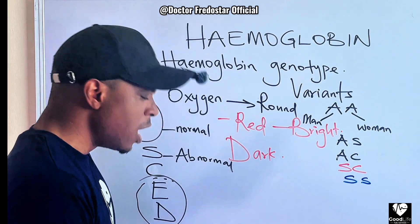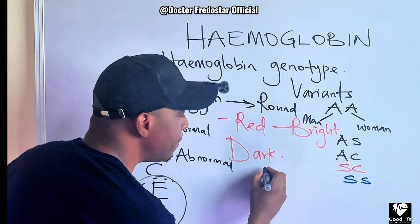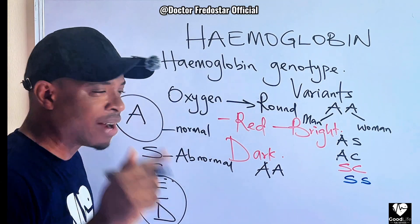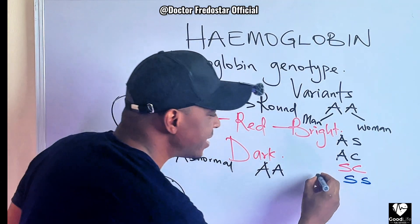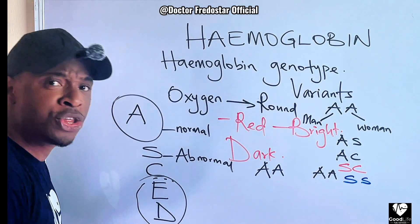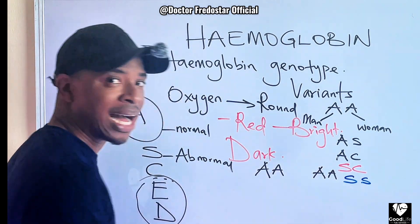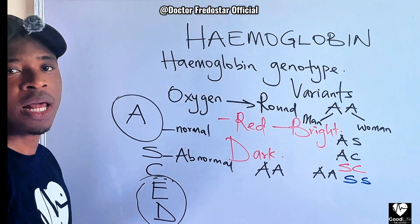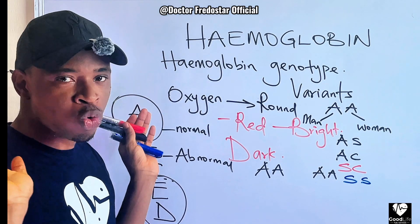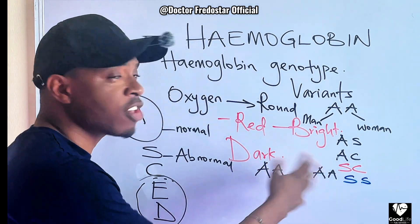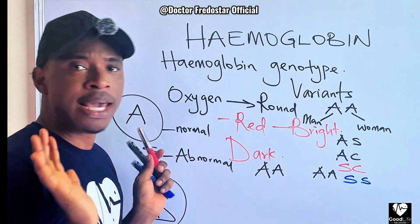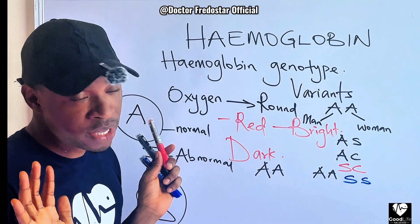Now, if you are AA and the person you want to marry is also AA, your two hemoglobin genotypes are both normal. Is there any problem? You are good to go — no issue at all. Because if you have children, all the children will be AA — good.